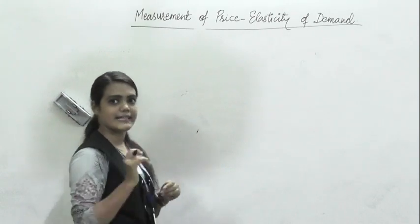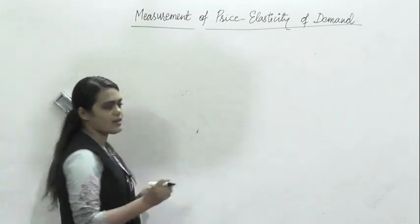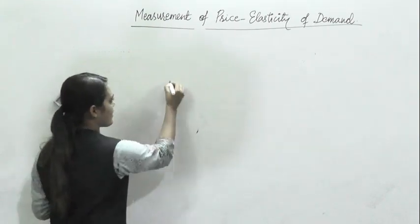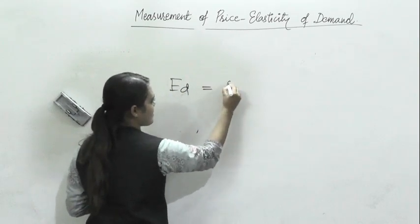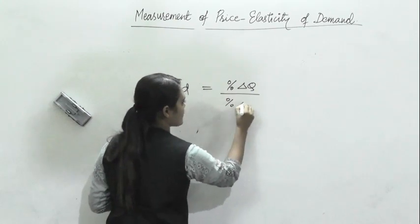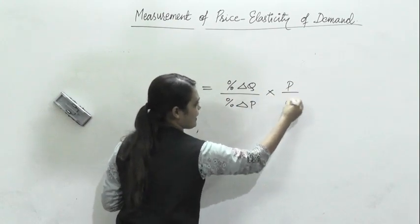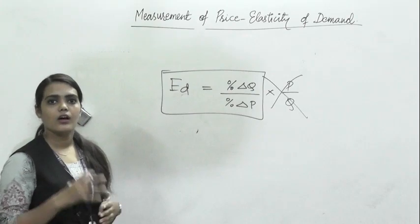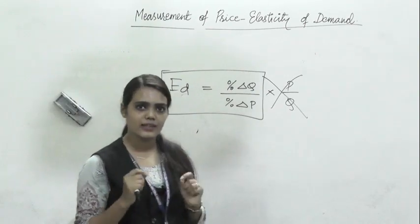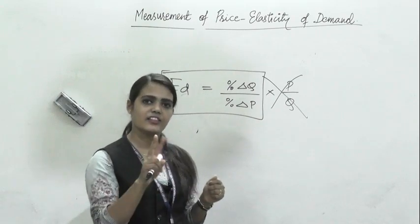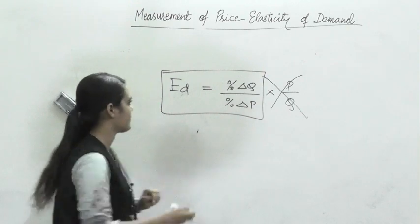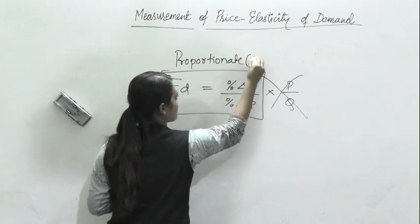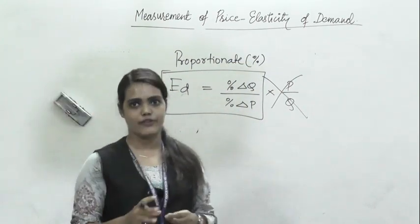A small tip: whenever the change in price is given as a percentage, you can directly calculate elasticity as percentage ΔQ upon percentage ΔP — you don't need to multiply by P and Q. But if values are given in absolute numerical terms rather than percentage, then use the formula method. Proportionate always means it is in percentage or share form.